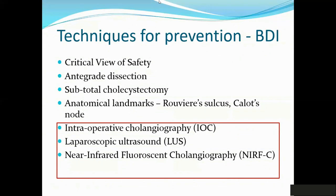The two classic landmarks are the Rouviere's sulcus, which is prominent in about 80 to 90% of patients at the time of laparoscopy, and the other is Calot's node. Of the seven points on the screen, the first four are purely technical — what you see and what you do at the time of laparoscopy. The last three are adjuncts that can be offered at the time of operation to decrease the risk of bile duct injury: the IOC, laparoscopic ultrasound, and fluorescent cholangiography.